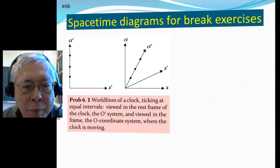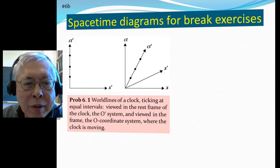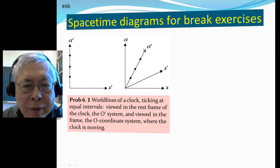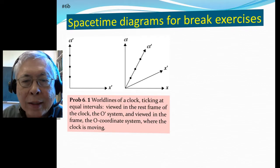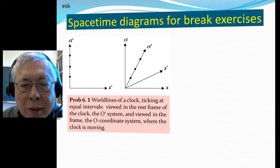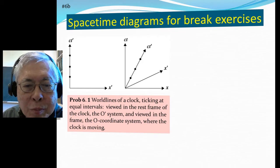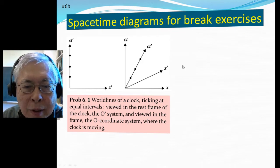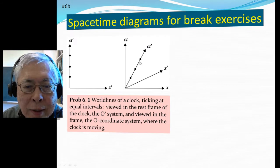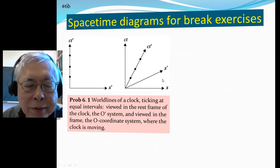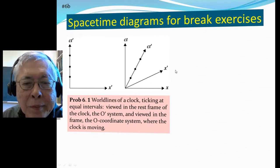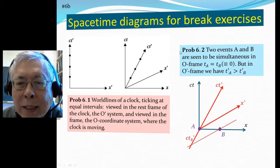The clock at rest traces a vertical worldline because it's at a fixed position. At fixed intervals it ticks, each dot representing a tick. To an observer that's moving, the axes x prime and t prime move in, so now the clock is moving. This line is the clock's worldline, ticking away.